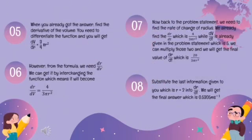The fifth step is to differentiate the volume function. You will get dV/dr equals 3/4 π r². The sixth step: from the formula we need dr/dV, which is obtained by taking the reciprocal, giving dr/dV equals 4 over 3π r².